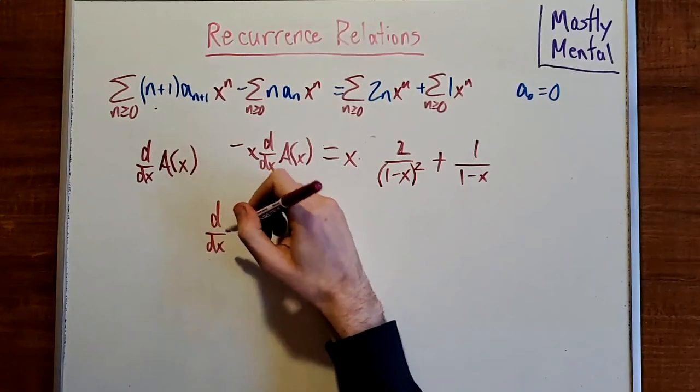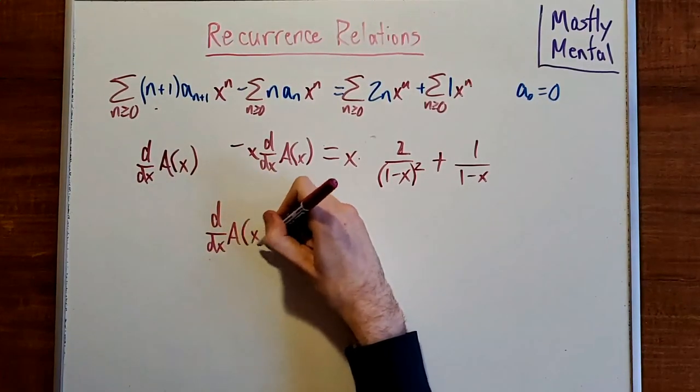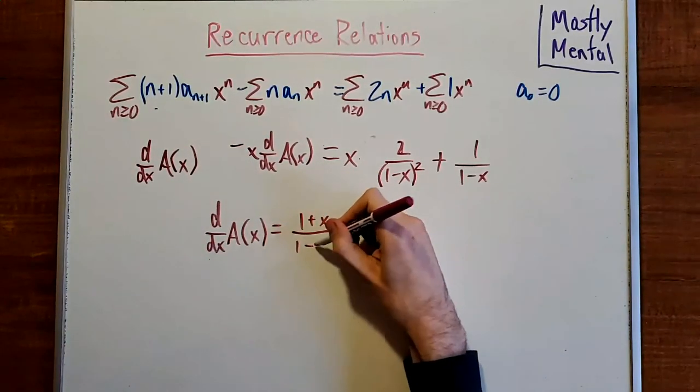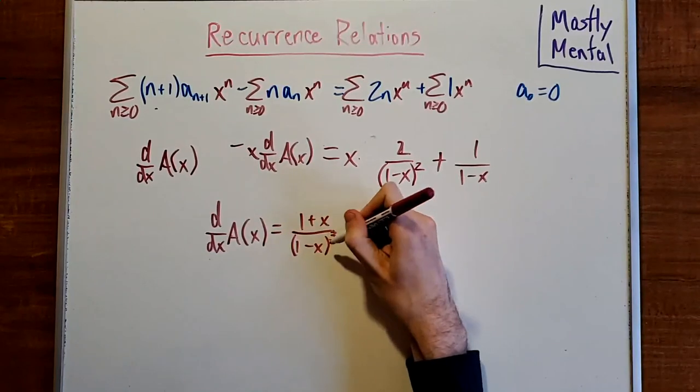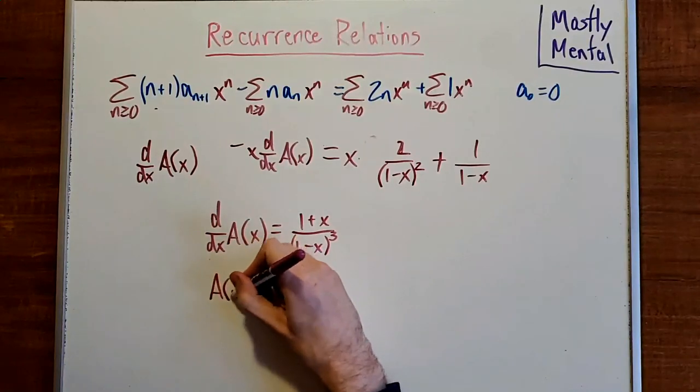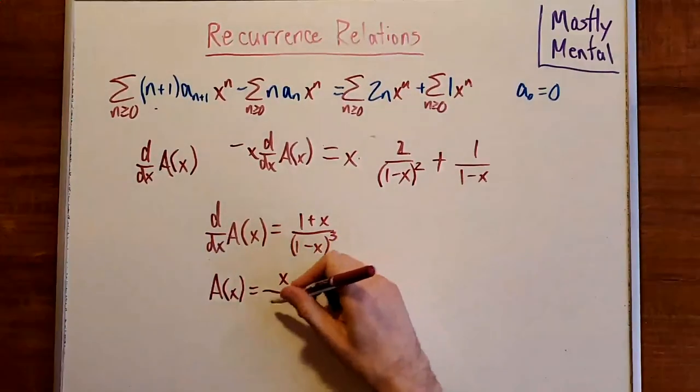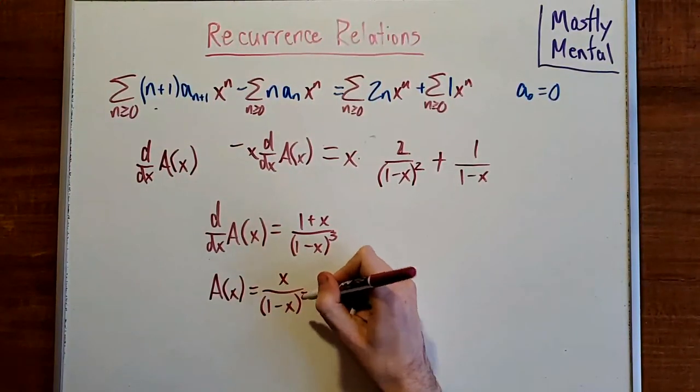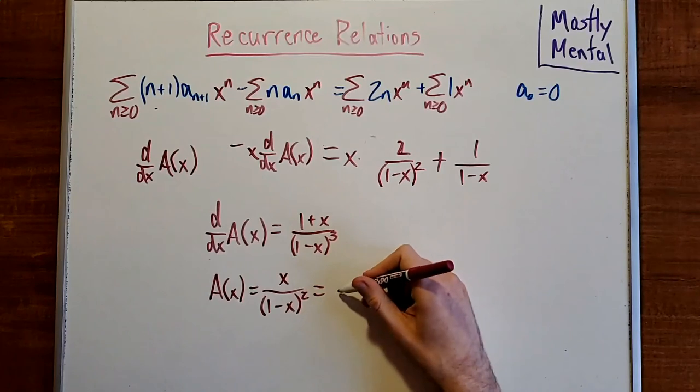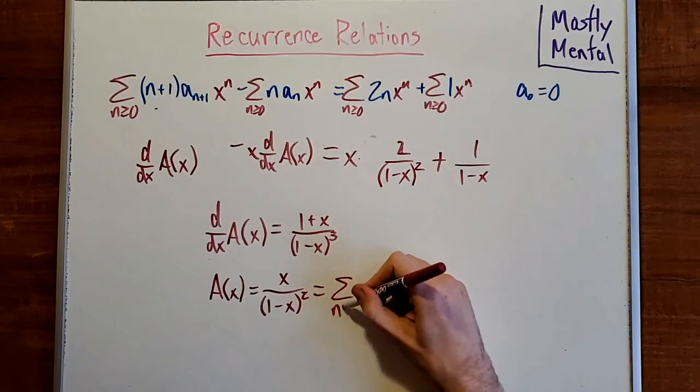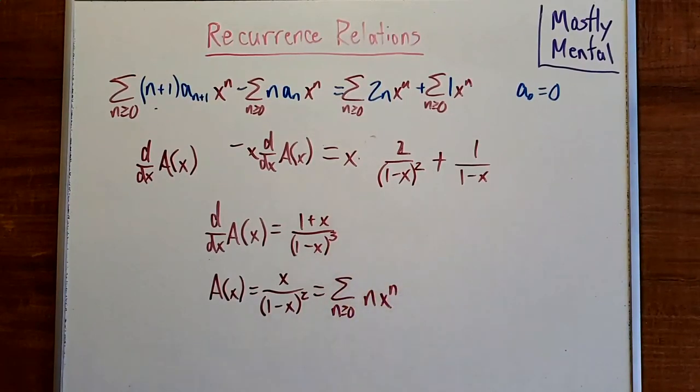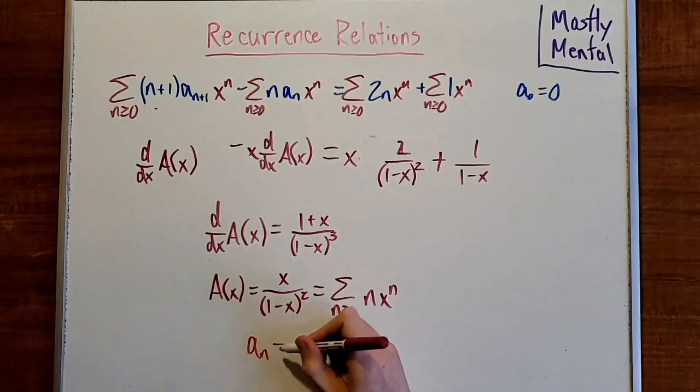Then rearranging everything, we get the derivative of A(x) is going to be (1+x) over (1-x)^3. Integrating, we get A(x) equals x over (1-x)^2. And as we just saw a moment ago, that's going to give us the sum for n greater than or equal to 0 of n times x^n. And so that tells us that a_n is n.